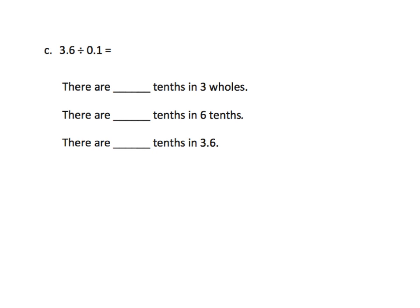We could say three point six divided by one-tenth. We're going to break up 3.6 into two parts. Let's talk about the three — how many tenths are in three wholes? By now our students should know that there are thirty tenths in three wholes, because there are ten tenths in one whole.